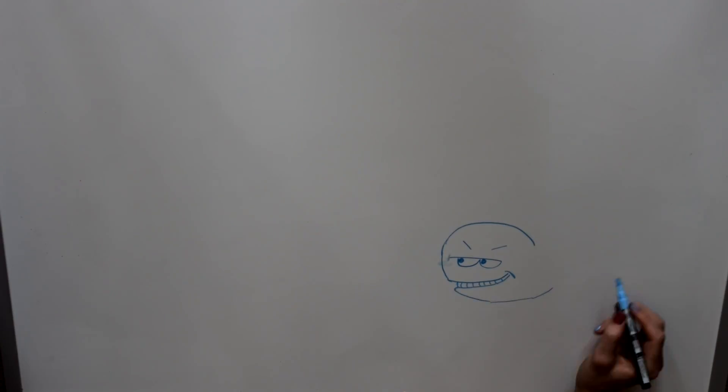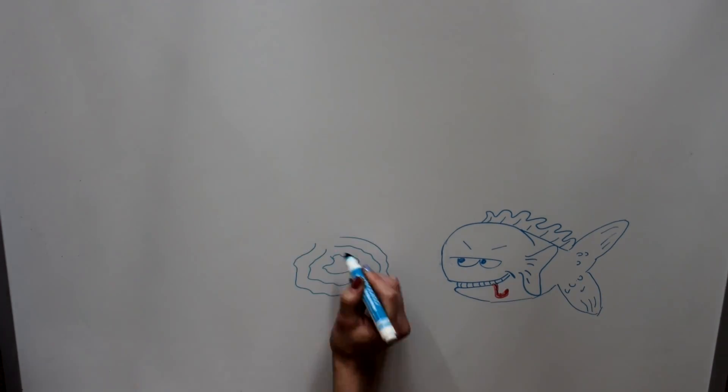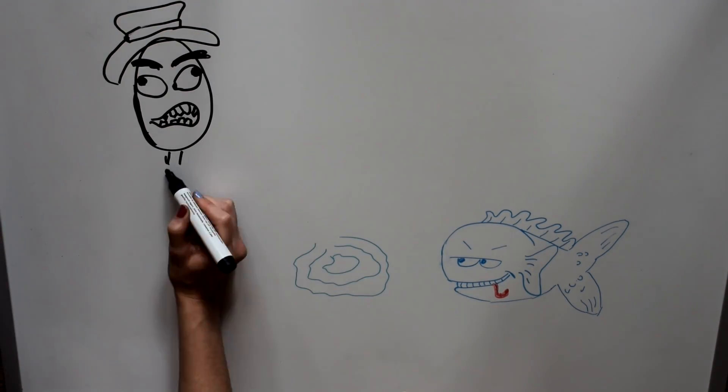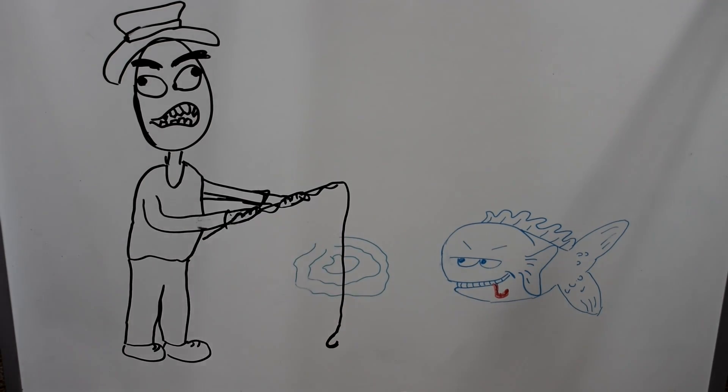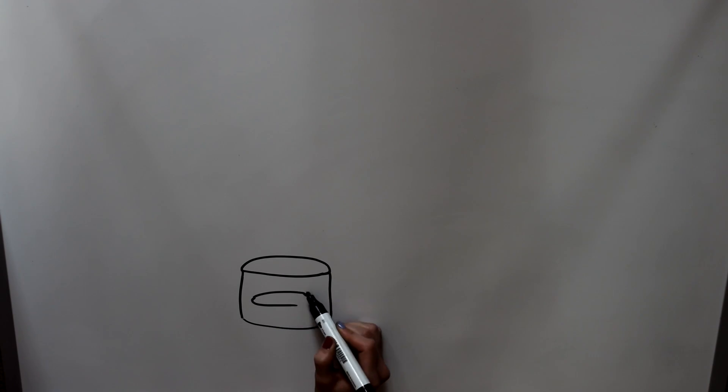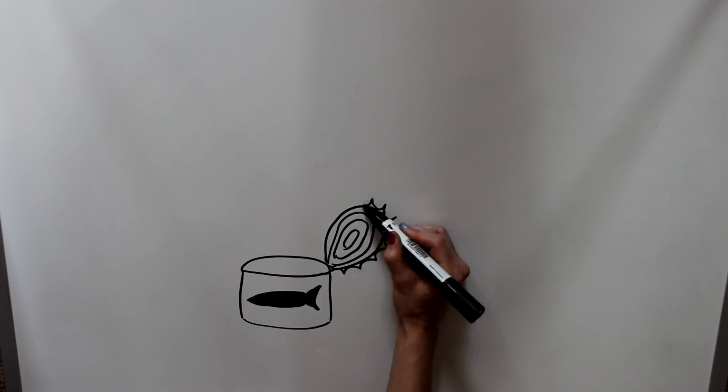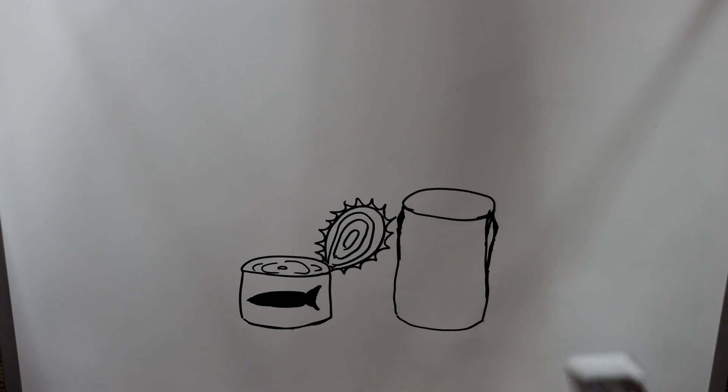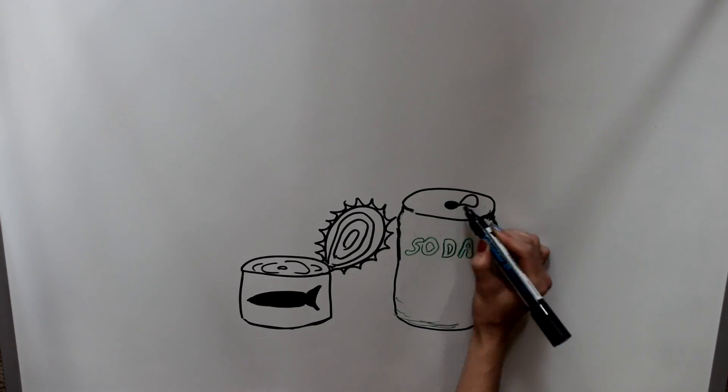It is much easier to just open a can of tuna and eat it right away, rather than spending hours on catching that same tuna that you find within your can. When you open a can of tuna or a can of soda, you think about the food and you don't usually think about the can.